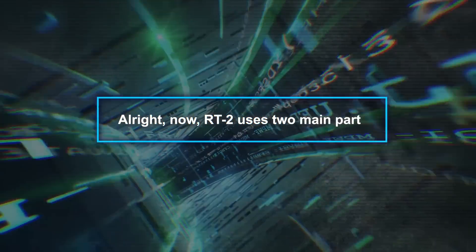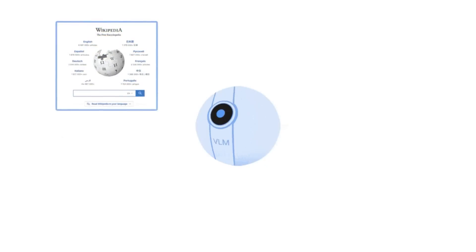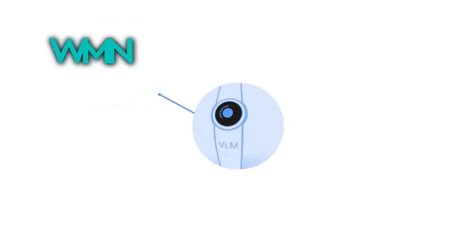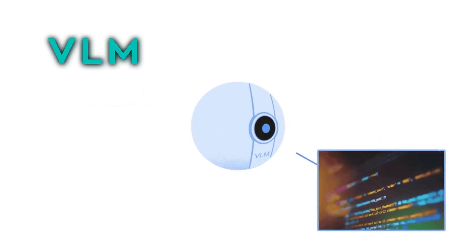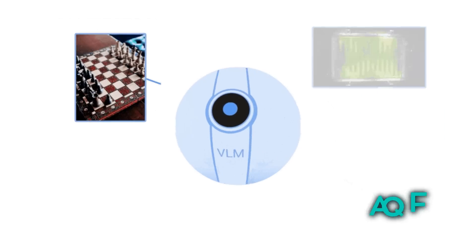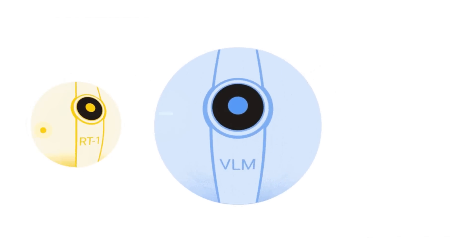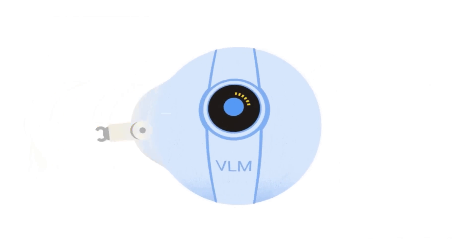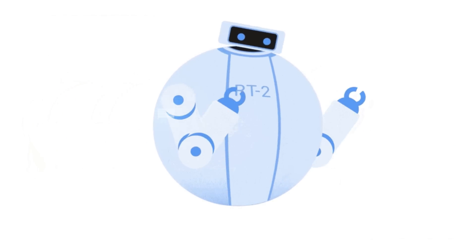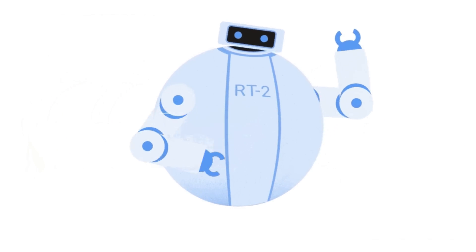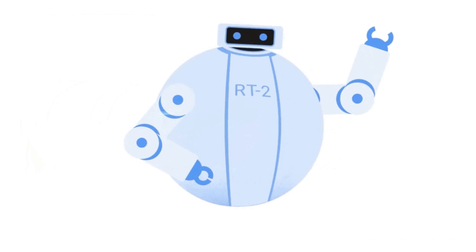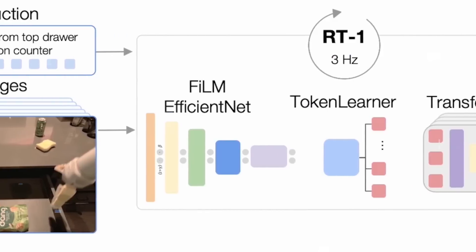RT2 uses two main parts: a Vision Language Model (VLM) and a Vision Language Action Model (VLA). A VLM learns from text and images on the web, understanding things like what objects are and how they relate. The VLA, which is an advanced VLM, not only learns but can also direct robotic actions.